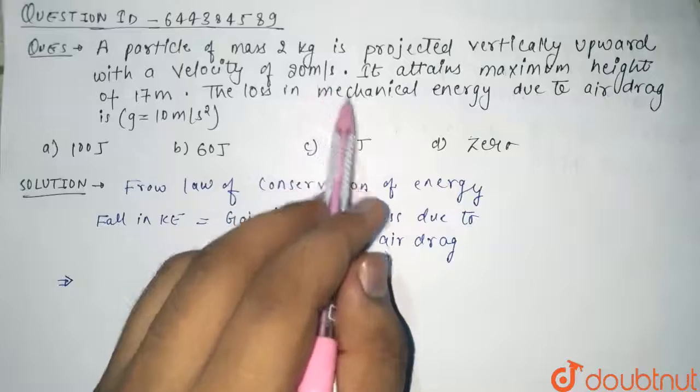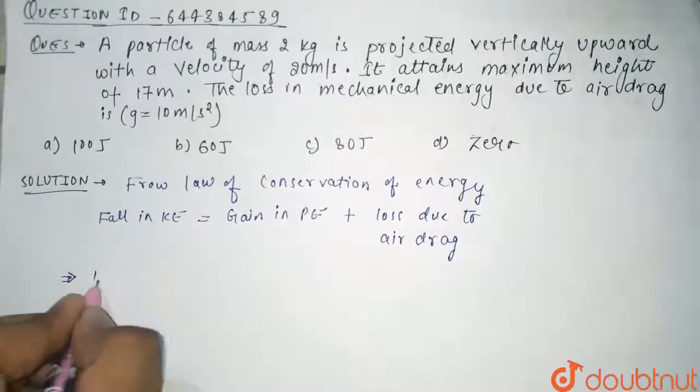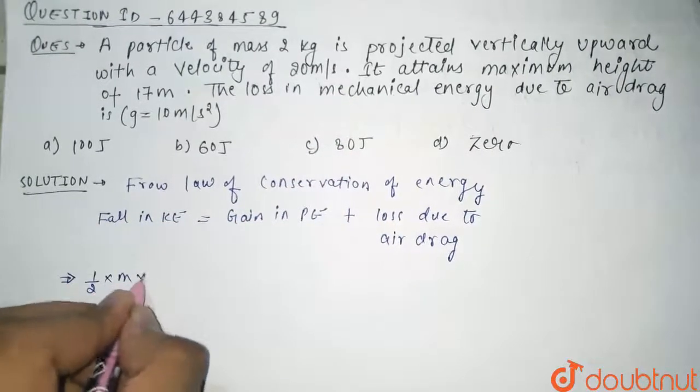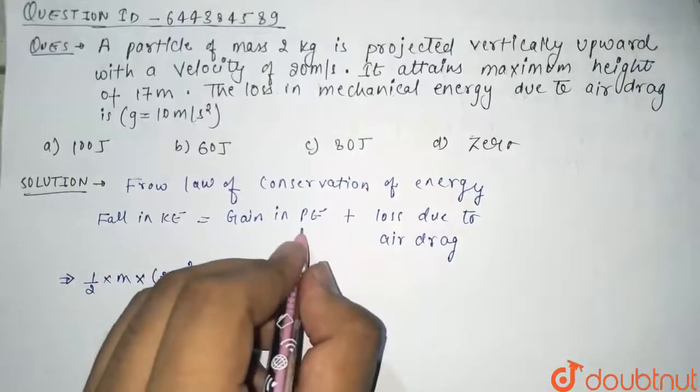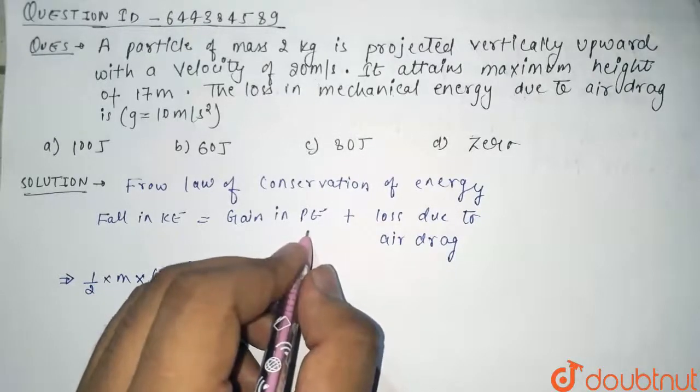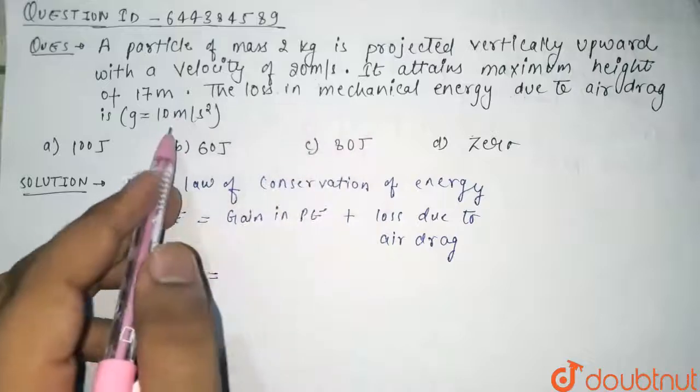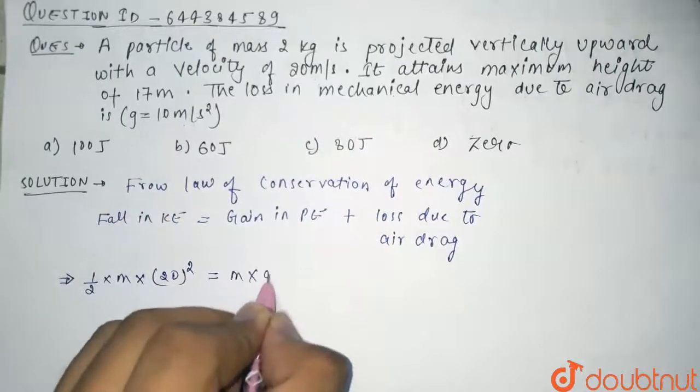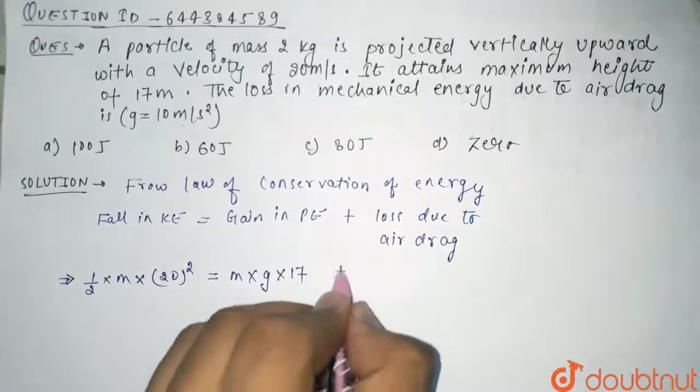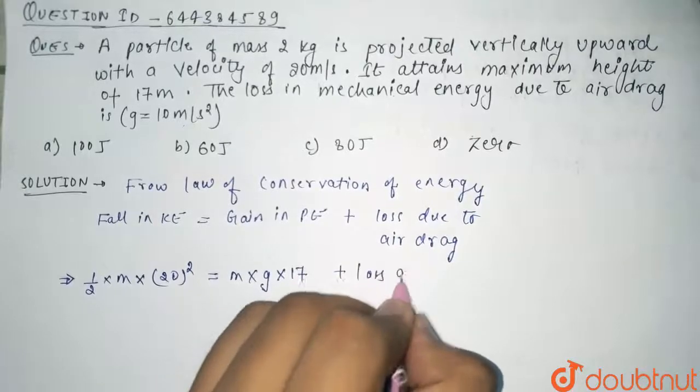So its fall in kinetic energy will be half m v squared, that is 20 squared, equals gain in potential energy. What is the gain in potential energy? We have been given that its maximum height attained is 17, so it will be m into g into h, that is 17, plus loss due to air drag.